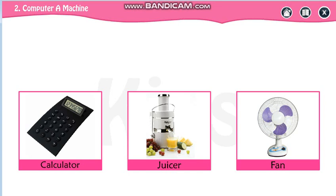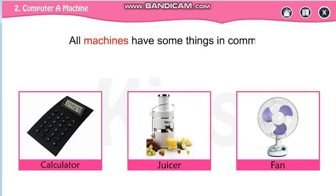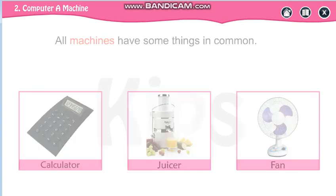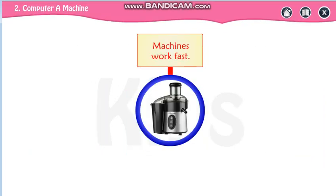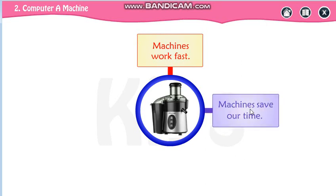Machines help us to do different types of work. But all machines have something in common. Let us see what that common thing is. All machines work fast, and all machines save our time.